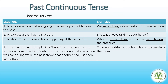The table above lists the situations to use past continuous tense. First, to express an action that was going on at some point of time in the past. Second, to express a past situation. Third, to show two continuous actions happening at the same time. And fourth, to use in the same sentence where two actions are taking place in the past — meaning when one action was continuing while the other had just completed in the past. Sentence examples are also illustrated above.